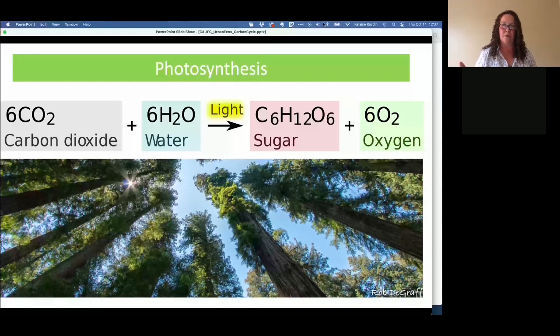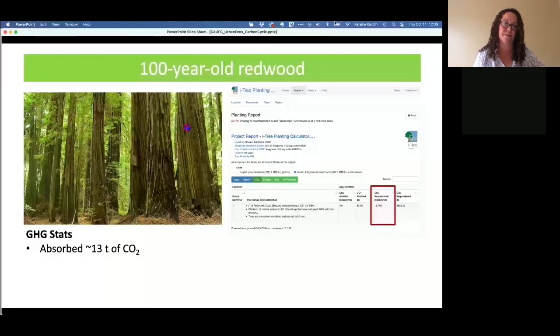Let's talk about those numbers in practical terms. In honor of our CUF hosts in their home in Marin, let's talk about a 100 year old redwood. We can use a tool like i-Tree Planting to figure out the CO2 work that that tree is doing. It sequestered or absorbed about 13,000 kilograms or 13 tons of CO2 over its lifetime.